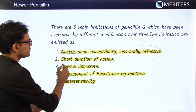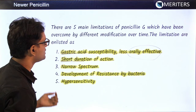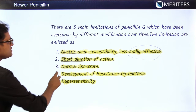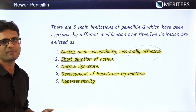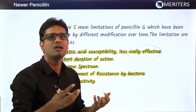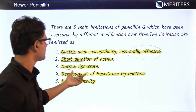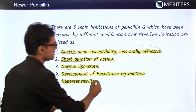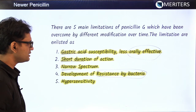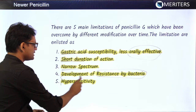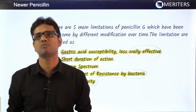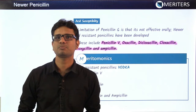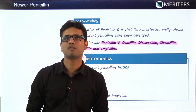The second shortcoming is short duration of action. Its duration of action is very short because it is secreted by an extra mechanism — tubular secretion from the kidney. Third, it is narrow spectrum, effective only against gram-positive bacteria. The fourth problem is development of resistance by bacteria. The fifth is hypersensitivity — penicillin is one of the most common drugs causing anaphylaxis reactions.